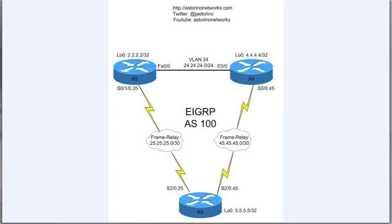Stub routing does a couple of different things. You only enable it on the stub router itself — so on router 5 we configure it with the EIGRP stub command. Router 5 will then signal up to both router 2 and router 4, informing them that it is now a stub router. This tells them: don't bother sending queries when you go active on a route. It cuts back on all those unnecessary queries, helps scale things better, and also cuts down on bandwidth utilization over the WAN links.